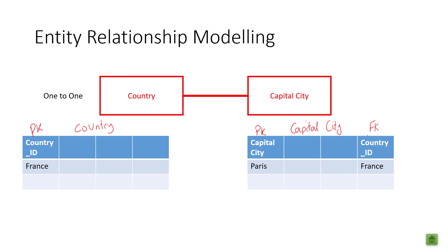We would link these two tables together using a foreign key. Remember what a foreign key is? It's a primary key from another table. Country ID is the foreign key of the primary key country ID in the country table. And that represents a one to one relationship.